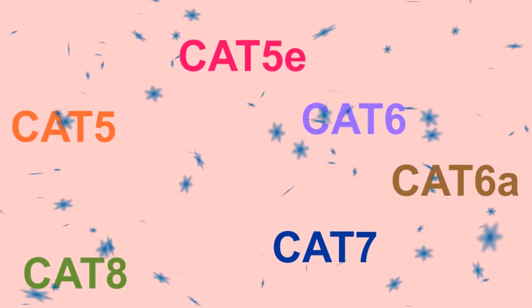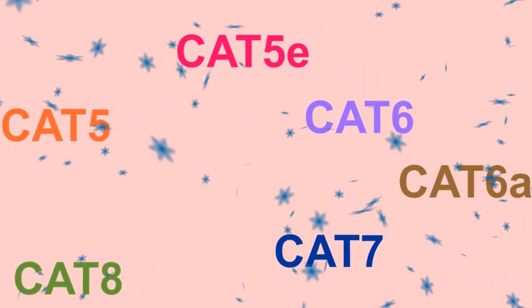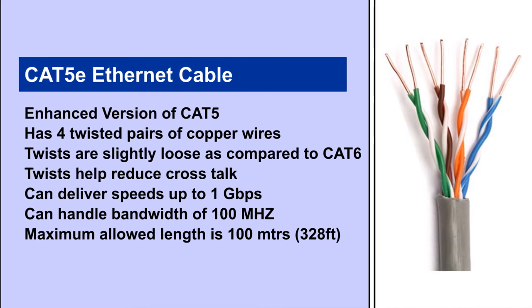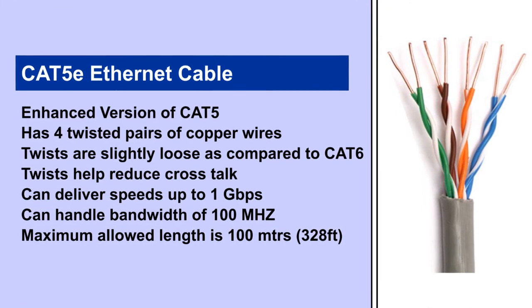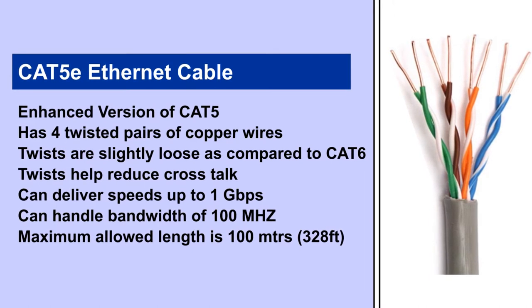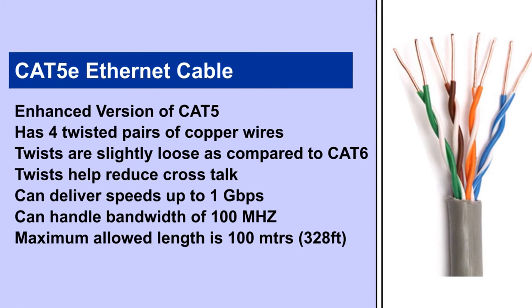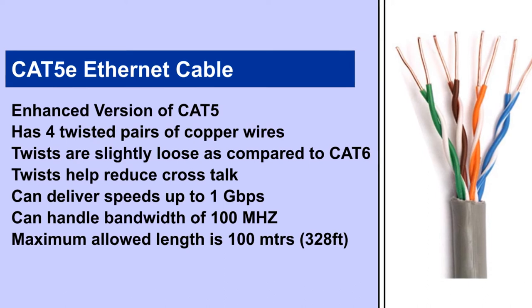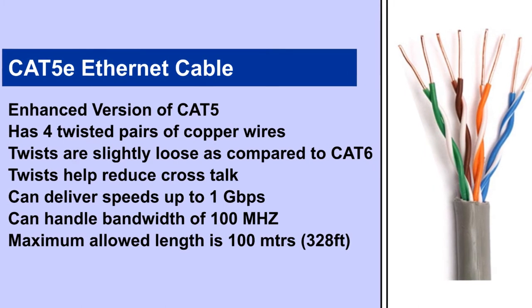Let's explore both cables in question — Cat5e and Cat6. Cat5e cable is the enhanced version of Cat5 cable in terms of reduced interference, so that it can reliably deliver one gigabit of speeds. It has four twisted pairs of wires. The twists are slightly looser compared to Cat6 cable, and these twists help in reducing crosstalk. The maximum allowed length is up to 100 meters or 328 feet, and it can handle a bandwidth of 100 MHz.